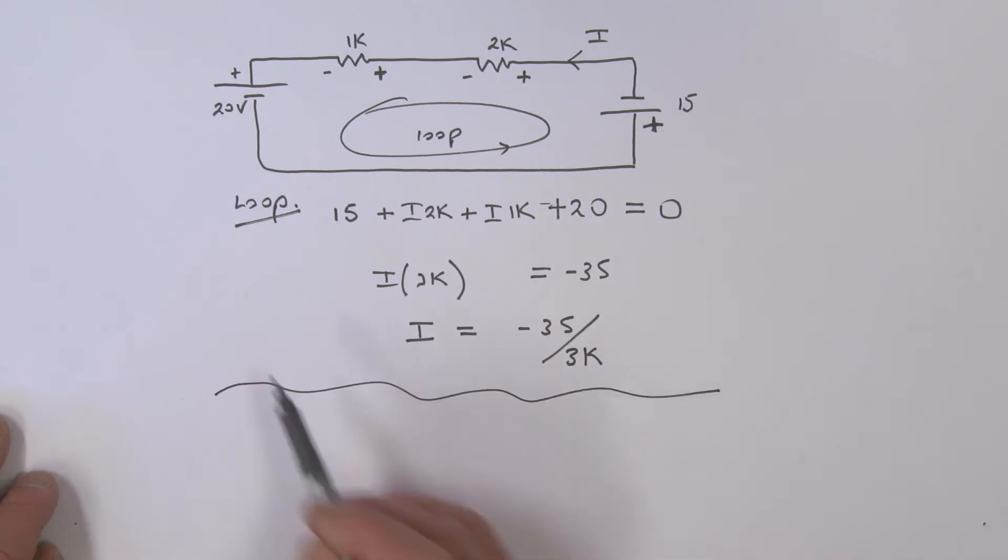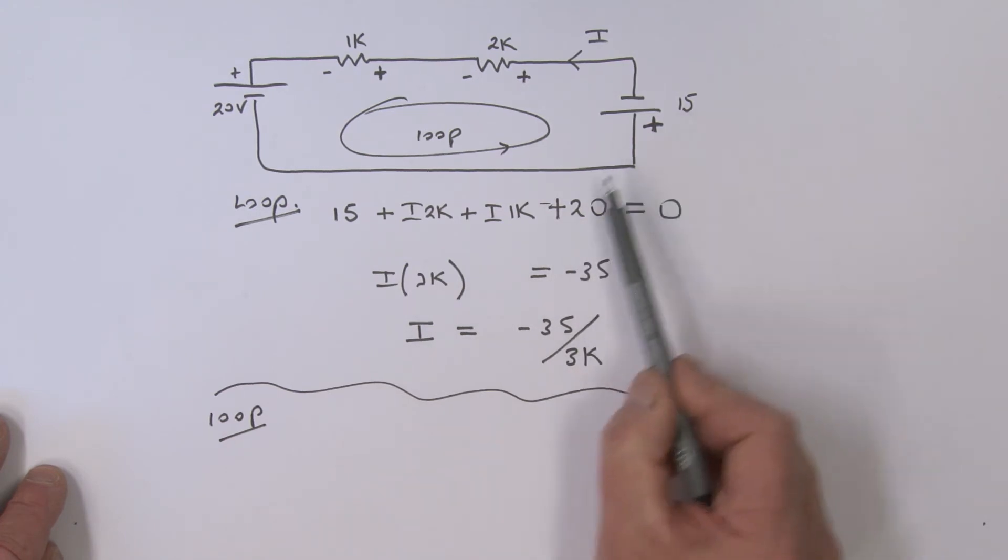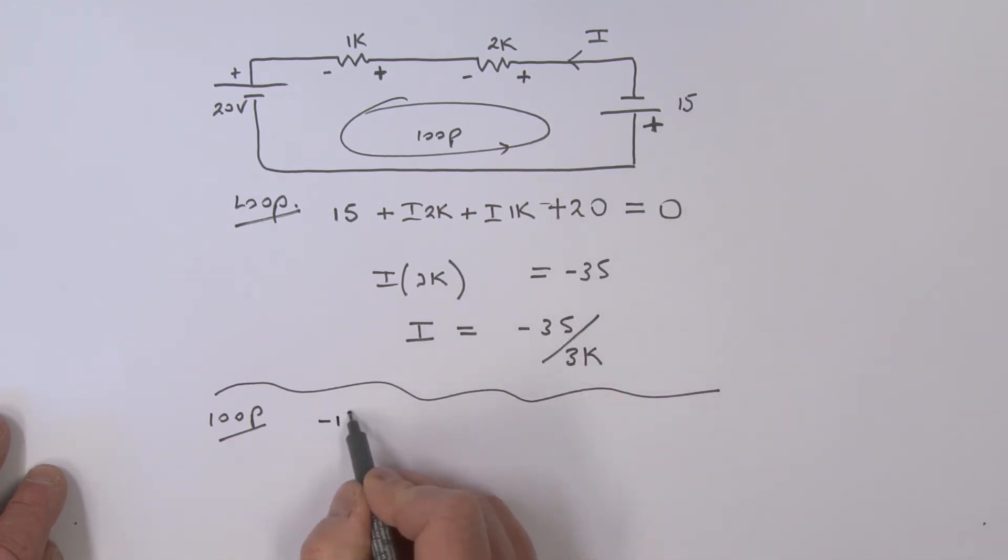If I've done it the other way—the way that we had considered in the past was to go around the loop plus to a minus. That is a minus 15. Then we've got a minus I×2K, a minus I×1K, and then dropping again, that is a minus 20, and all of that is equal to zero.